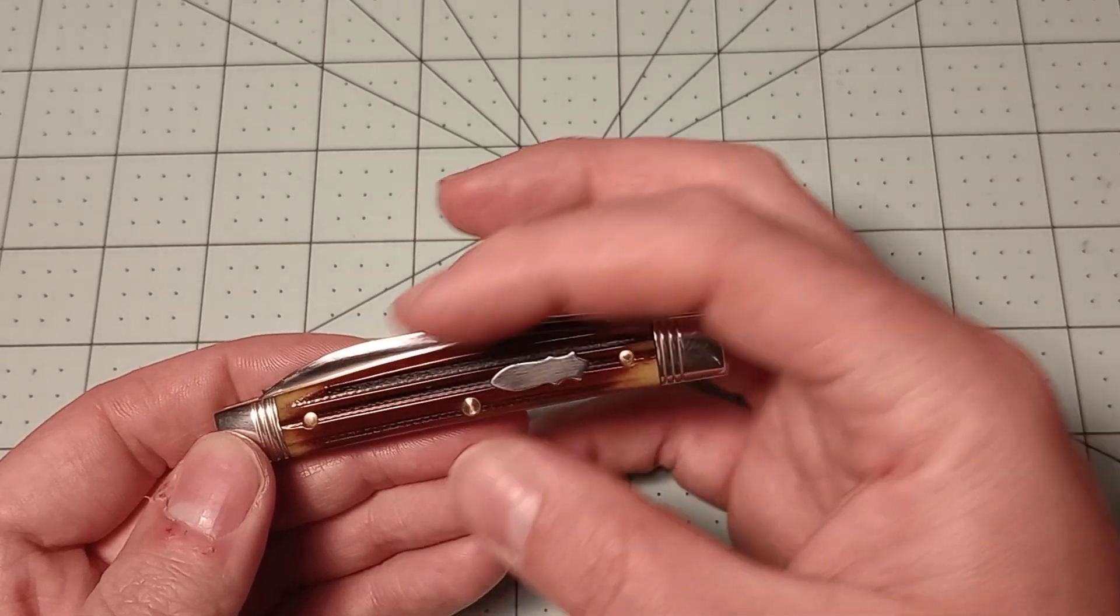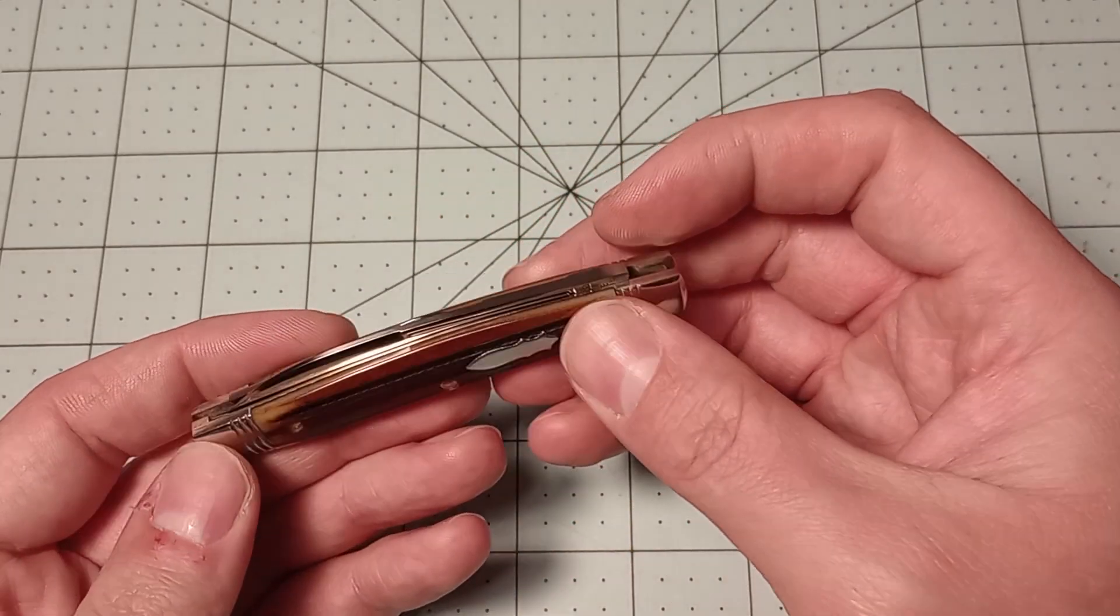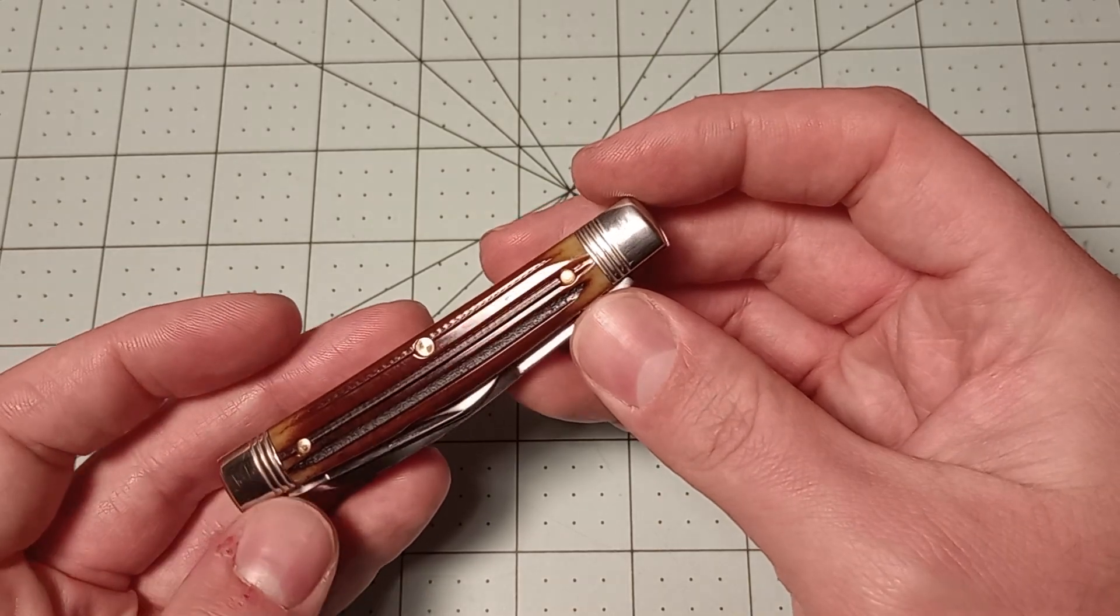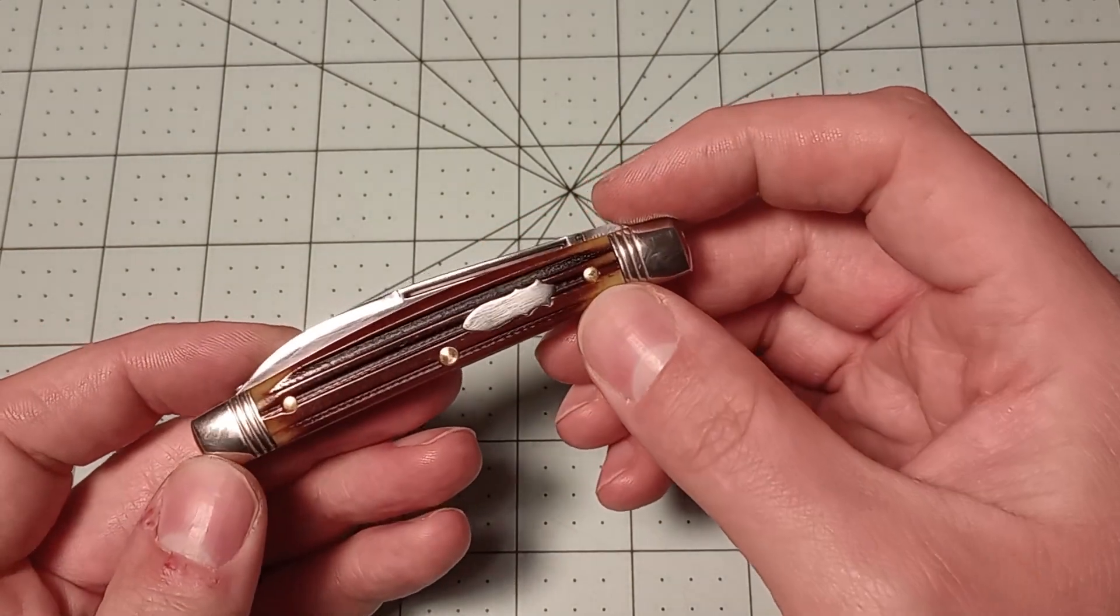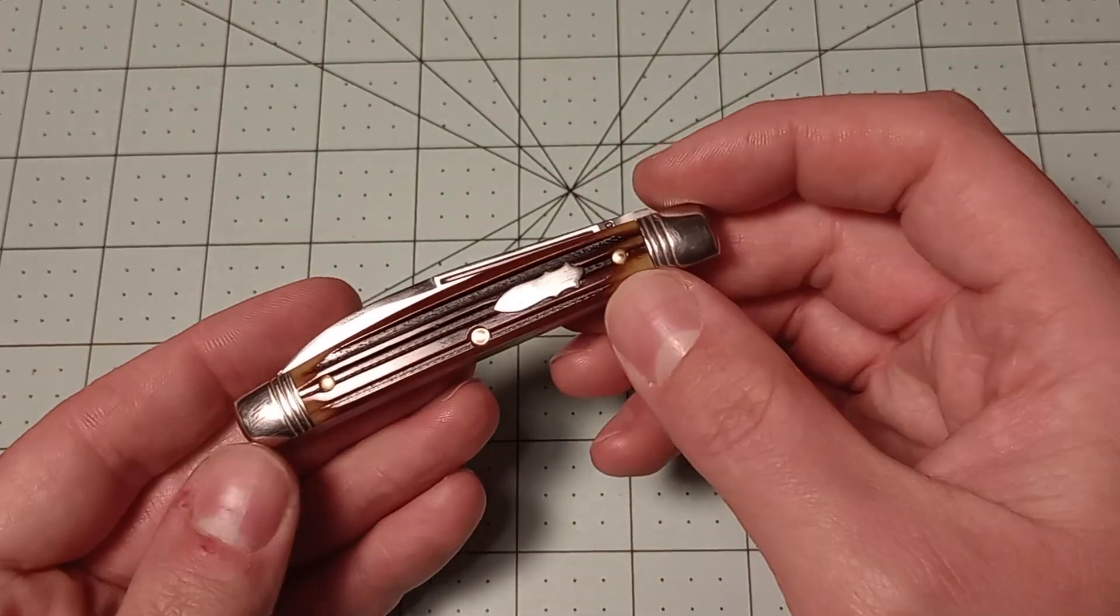But just keep in mind if your bone would crack or something, they're not going to fix that for you. At least not under the warranty. They may charge you to replace it. I'm not sure how that works. I'm not sure if they even want to work on the store knives.